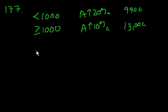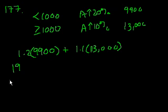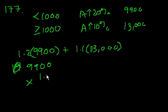Let's just do what I think they're assuming. So essentially, you just have to take the $9,900 and increase it by 20%. 9,900 times 1.2. And then add that to the $13,000 increased by 10%. So 1.1 times 13,000. Let's just write 9,900 times 1.2.